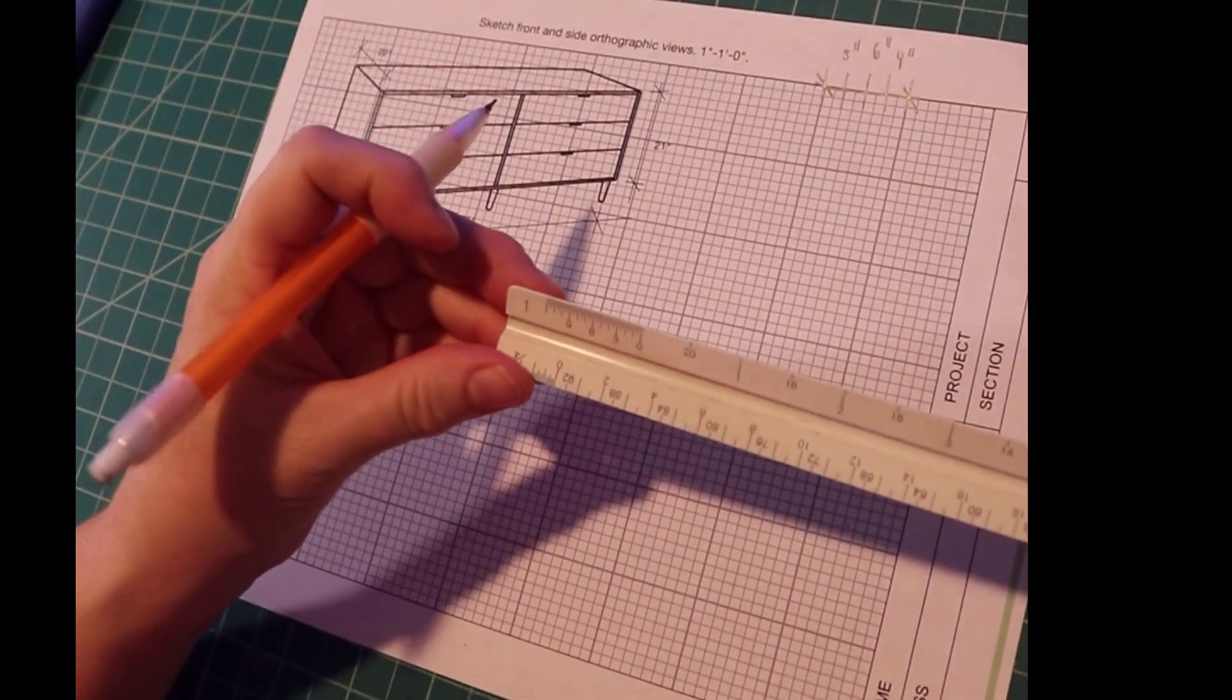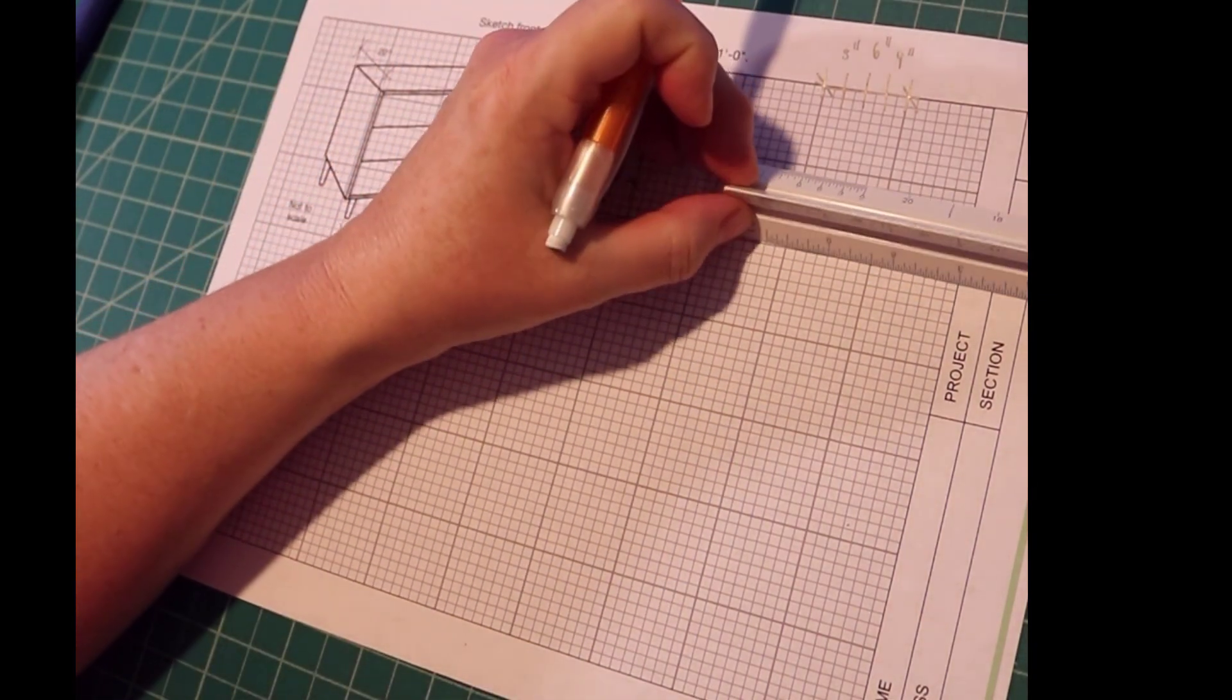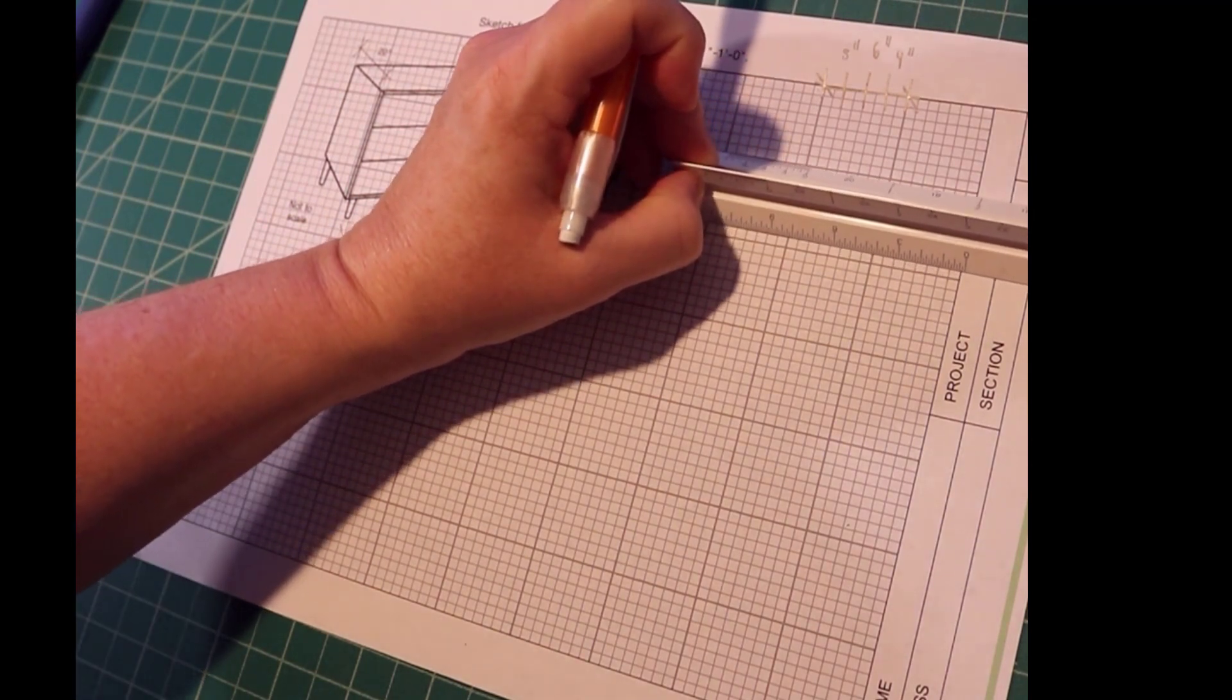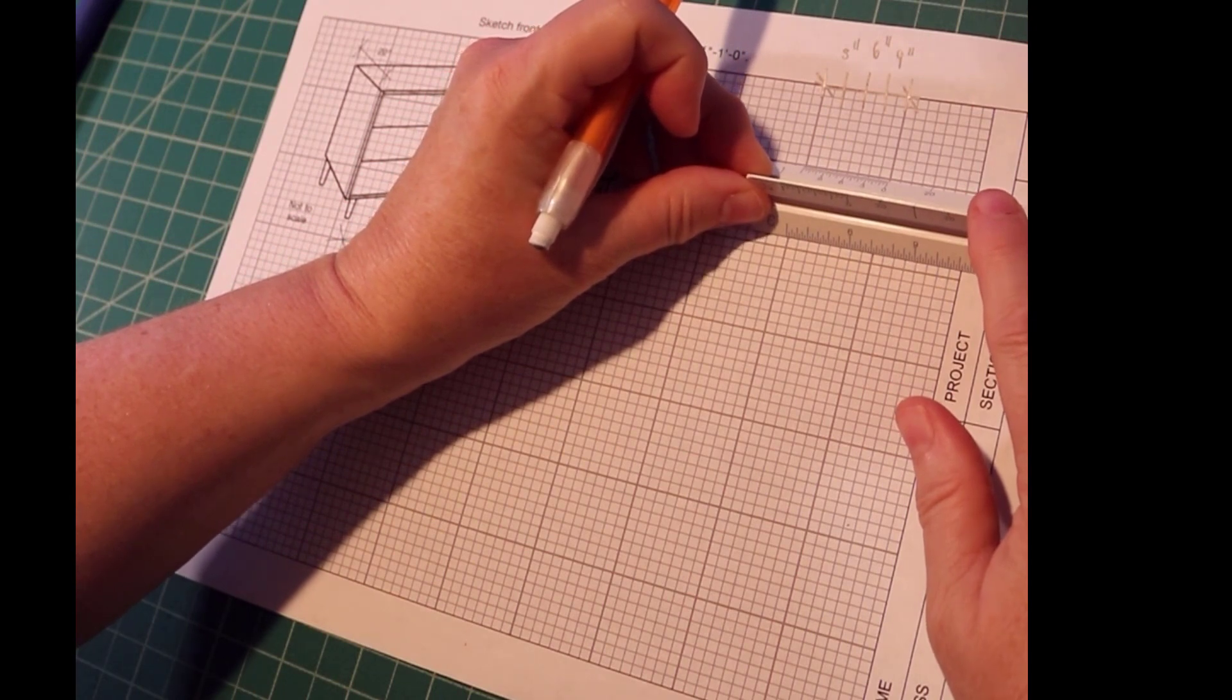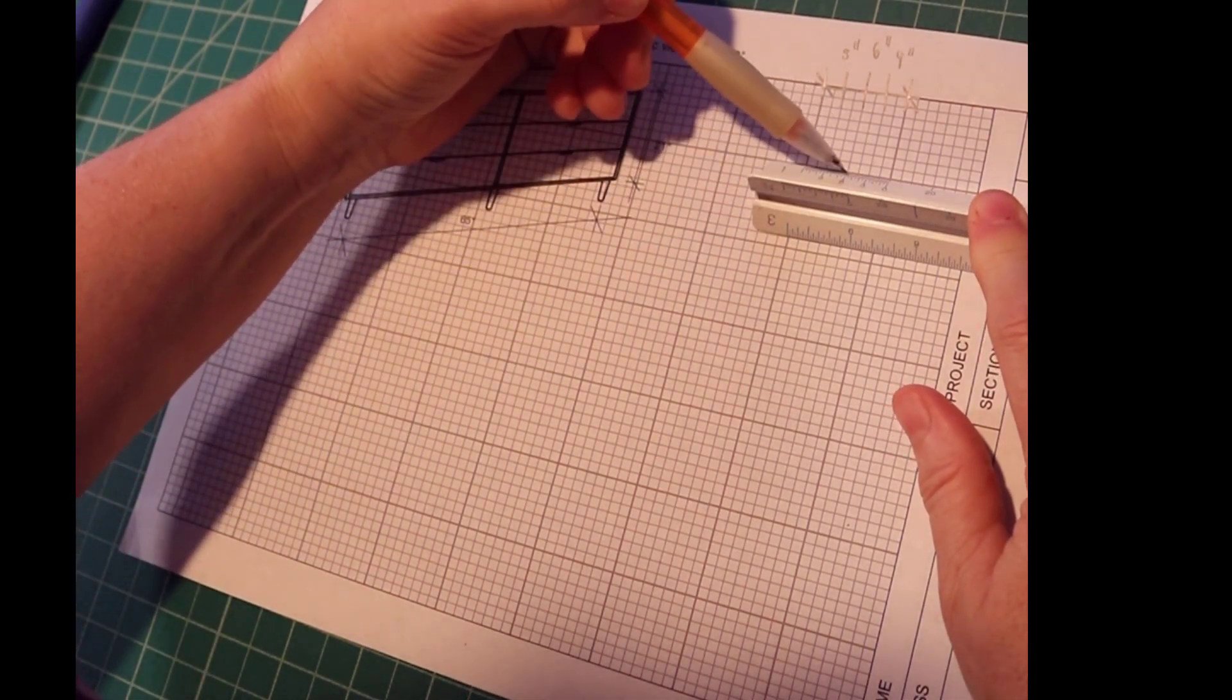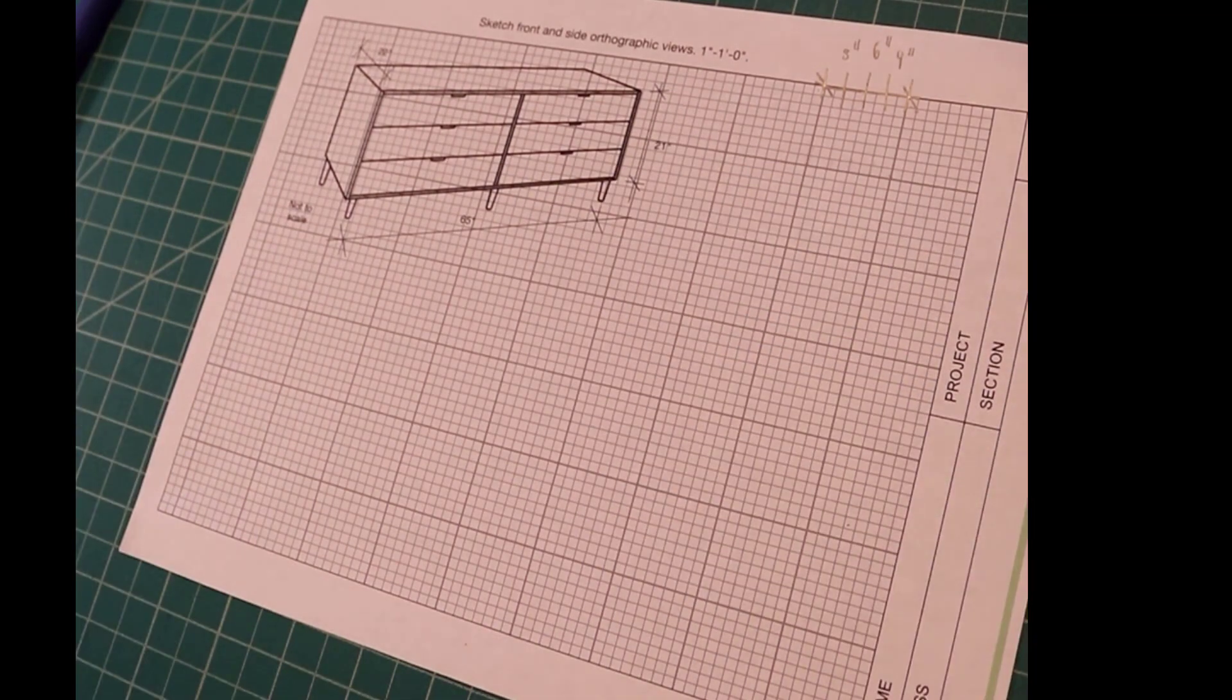You can always verify that, if you get confused, by taking your 1 inch equals a foot scale and putting it on the grid, so you can see this is 1 foot. If you put the subdivided scale on it, you can see this is 3, 6, 9, 12 inches from there to there.